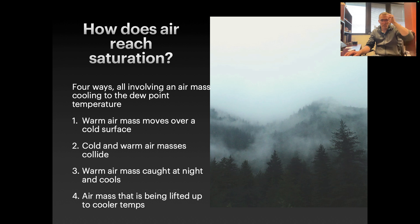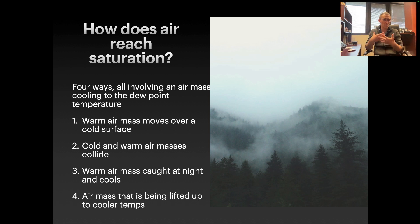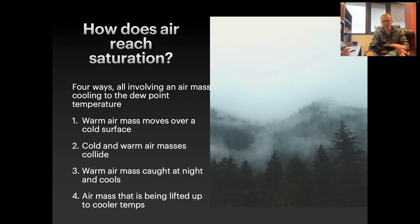How does air reach saturation? The same basic process operates in all cases — it's warm, moist air that's cooling down — but there are various ways this happens. One way is for a warm air mass to move over a cold surface. Another way is for cold and warm air masses to collide, which happens in fronts. A warm air mass might also get caught at night and cool down — that happens a lot in Missouri, where a warm air mass gets caught down in a valley, cools down at night, and results in fog in the valleys.